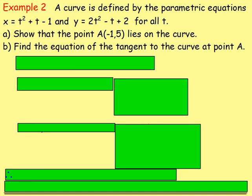Example 2. A curve is defined by the parametric equations x equals t squared plus t minus 1, and y equals 2t squared minus t plus 2, for all t. First, show that the point A, negative 1, 5, lies on the curve. Second, find the equation of the tangent to the curve at point A.